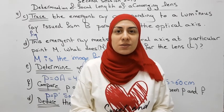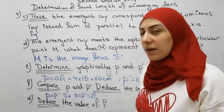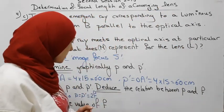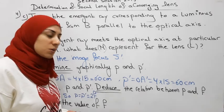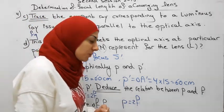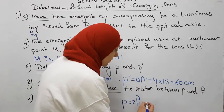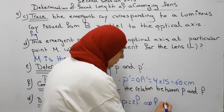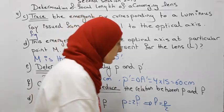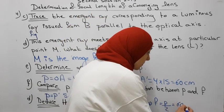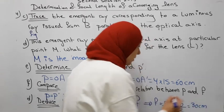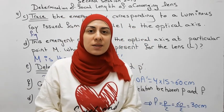In the last part of this exercise we want to deduce the value of the focal length F. As we said, P equals 2F, so F equals P over 2. We already found P to be 60 centimeters, so 60 divided by 2 gives us a focal length of 30 centimeters.